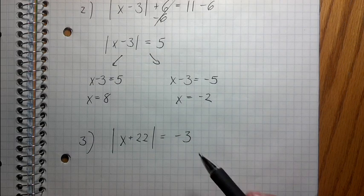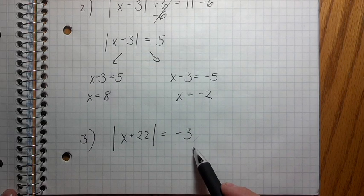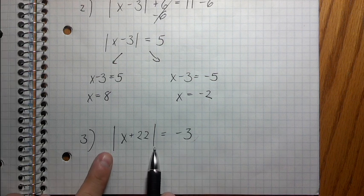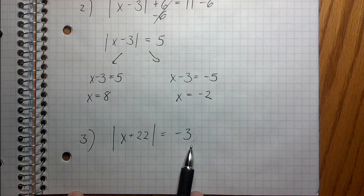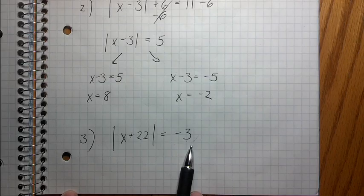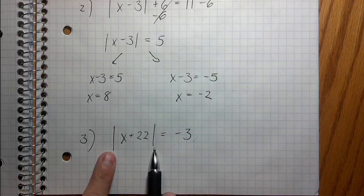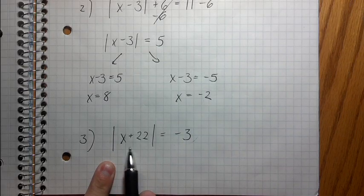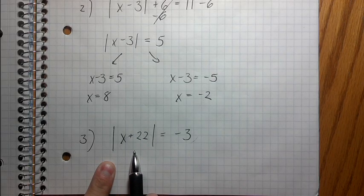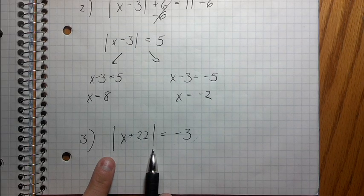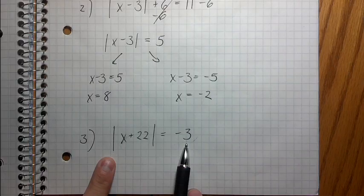Why? Why is there no solution? It's because this is negative. Anytime you have an absolute value of something that equals a negative number, it is impossible. Well, why is it impossible? Because absolute value always makes everything positive. So no matter what is inside this absolute value, it's always going to be positive. And so there's no way it's going to end up being negative. Does that make sense?